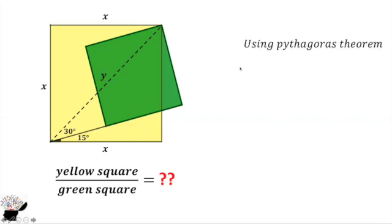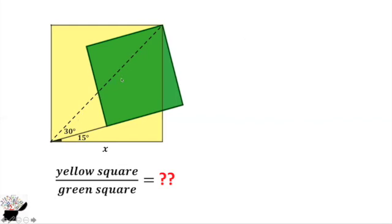So using Pythagoras theorem, you are going to get y² = x² + x², and y = x√2. So the diagonal length is x√2.